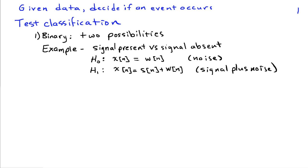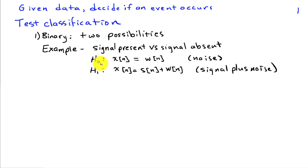To do this, we'll use a test that we apply to the data, and we're going to introduce some terminology in terms of how we can classify different types of tests. A binary test has two possibilities: a signal of interest is present or a signal of interest is absent. We define hypothesis H0 as the measured data being due to noise alone, whereas hypothesis H1 is the measured data being due to signal plus noise. Given an observation X, we want to decide which of these two scenarios was in play.